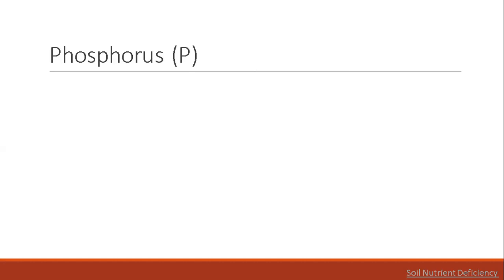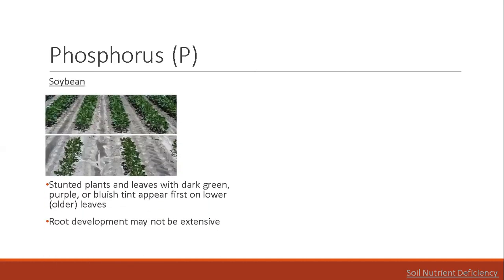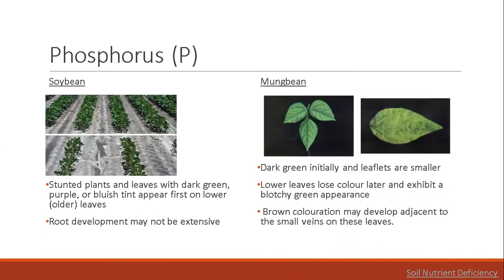Phosphorus deficiency is more likely to occur in low pH soils where phosphorus is less readily available to plants. Compacted soils with damaged root systems can also cause phosphorus deficiency. In soybean, when phosphorus is deficient, stunted plants and leaves with a dark green, purple, or bluish tint appear on lower or older leaves, and fruit development may not be extensive. In mung bean, plants remain dark green initially and leaflets are smaller than normal plants with adequate phosphorus. Lower leaves lose color and exhibit a bluish green appearance, and brown coloration may develop adjacent to the small veins on the leaves.